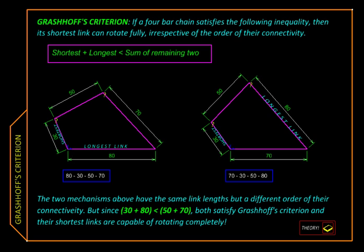So here is the simplest of its kind: four links, one, two, three, four, connected with revolute pairs here, here, here, and here, forming what is called a four-bar mechanism.